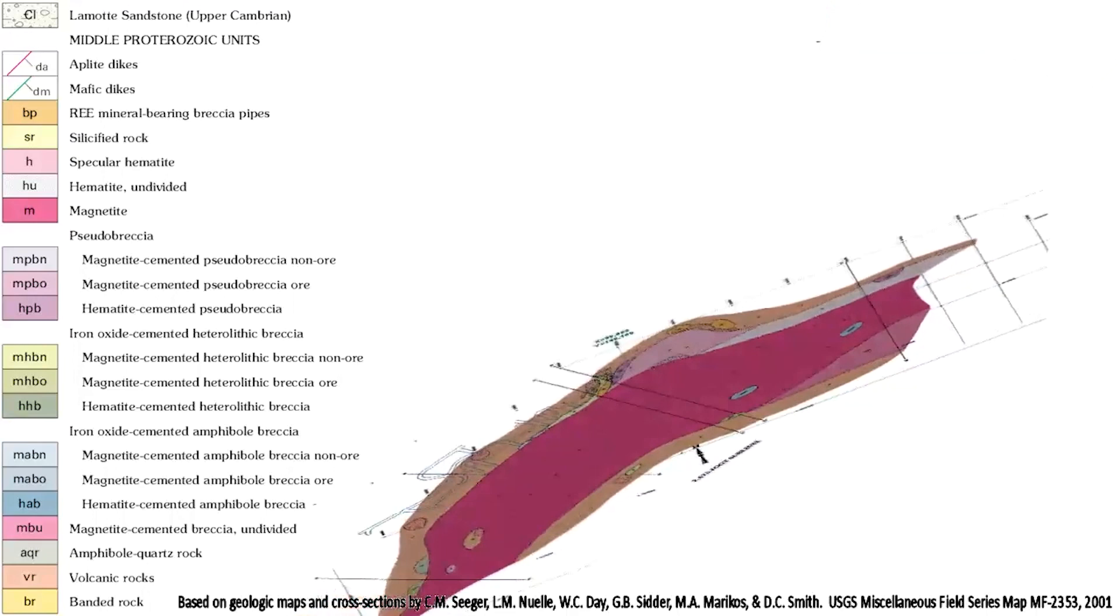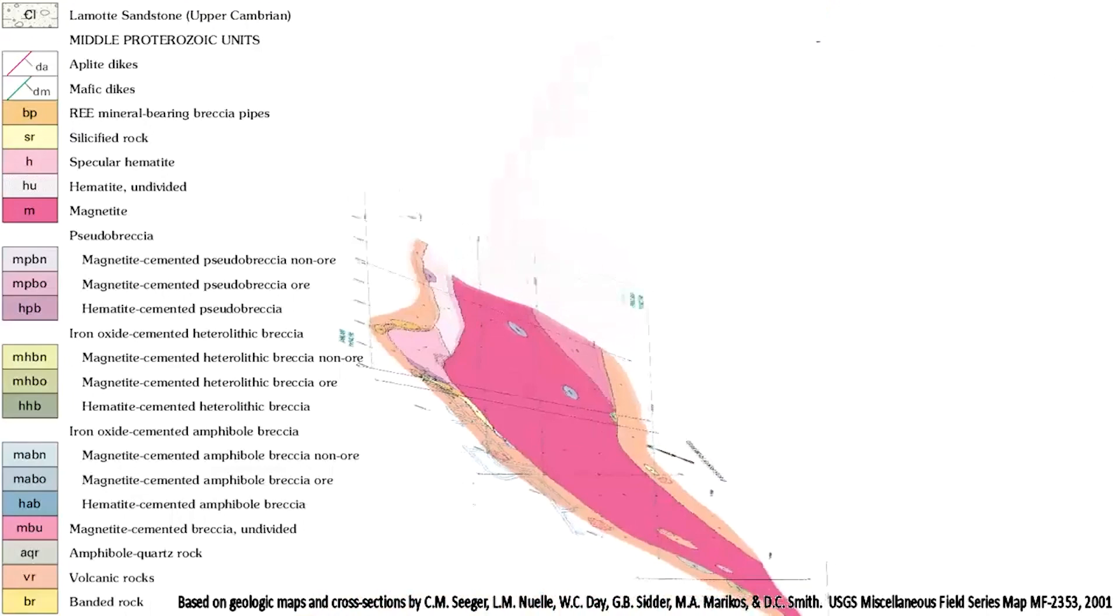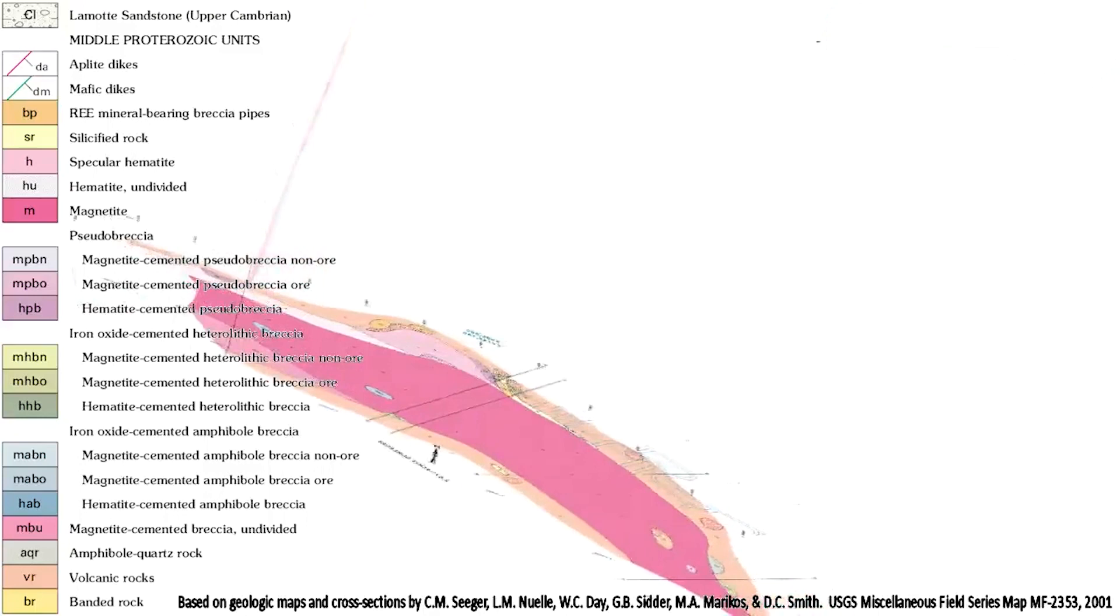The development history of Pea Ridge began in 1948 when a major magnetic anomaly was detected above the deposit. St. Joseph Lead Company drilled this magnetic anomaly as part of their lead-zinc exploration program and discovered a large magnetite body.